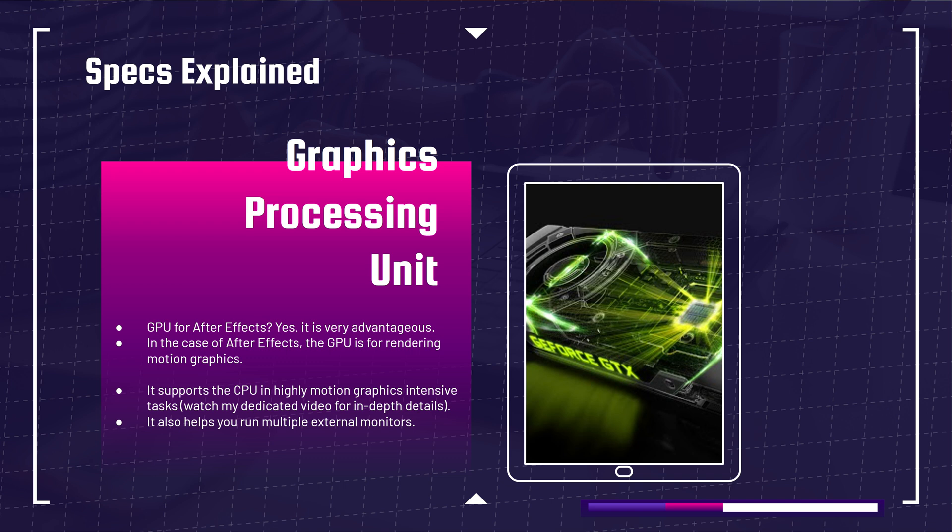What does the GPU actually do? It renders out the motion graphics and helps drive multiple monitors. So if you're using multiple monitors and rendering heavy After Effects projects, I'd recommend at least the RTX 3070 if your budget allows — that gives you good After Effects rendering performance and smooth multi-monitor support.